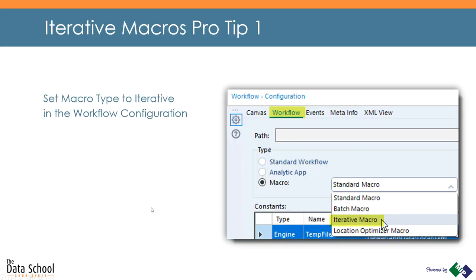Pro tip number one: how do you set up Alteryx to know that you want it to be an Iterative Macro? That's nice and easy. You go into the workflow configuration, click on your workflow tab, and once you set up your workflow to be a macro it'll default to standard — and you change it to Iterative from there. Just a reminder, we are going to show you all of these in our live demo in just a moment.